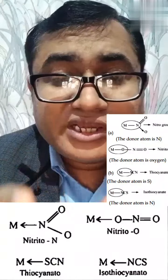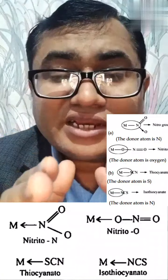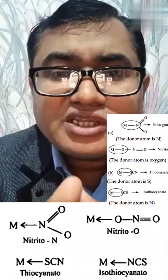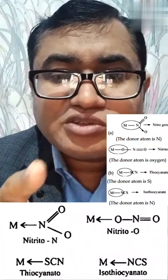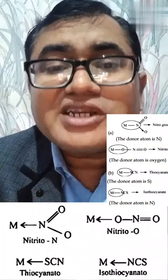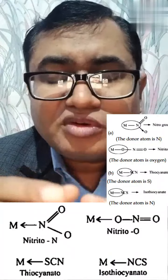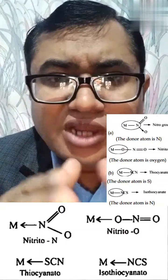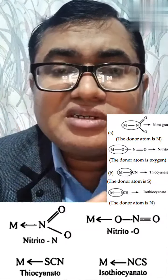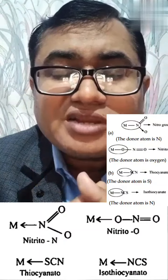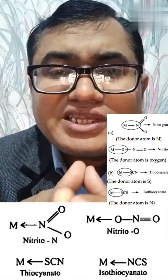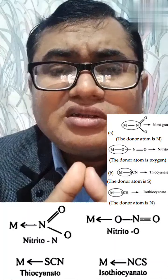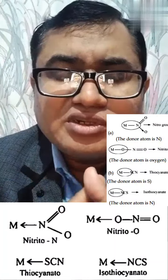One special type of ligand is the ambidentate ligand. These are monodentate ligands that have two possible ligating atoms. For example, NO2⁻ has two atoms — one nitrogen atom and one oxygen atom. If the oxygen atom donates its lone pair, it is called nitrito (ONO⁻). If the nitrogen atom donates its lone pair, it is called nitro (NO2⁻). Similarly, SCN⁻ can coordinate as thiocyanato or isothiocyanato — so these are two ambidentate ligand examples.